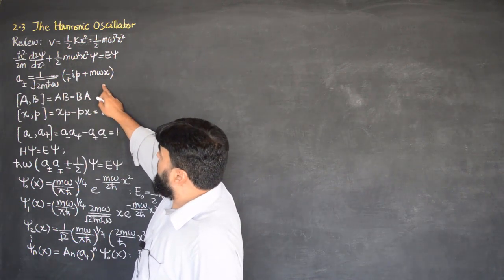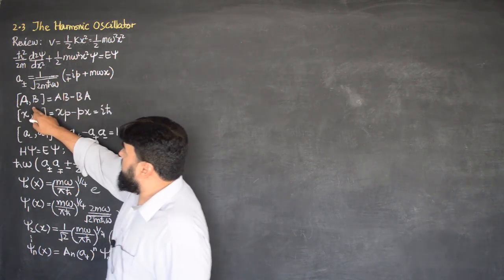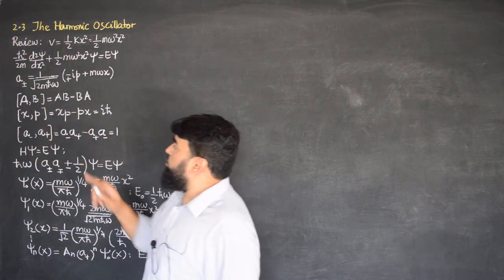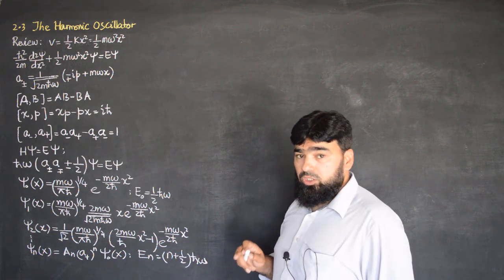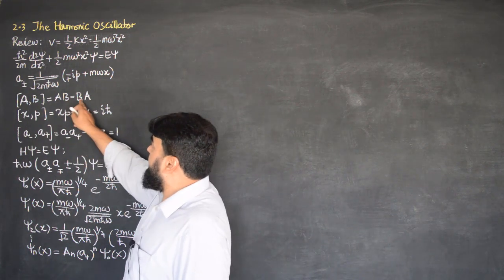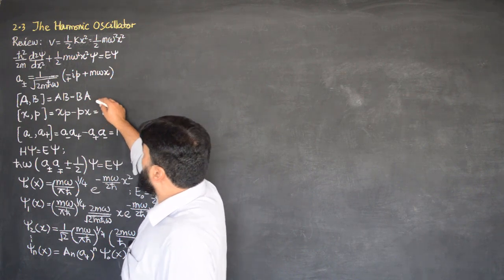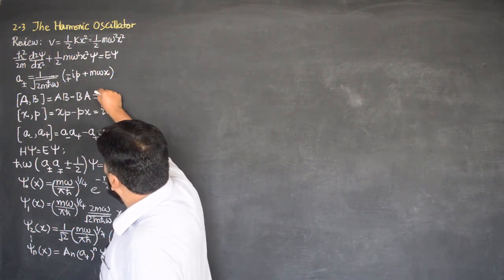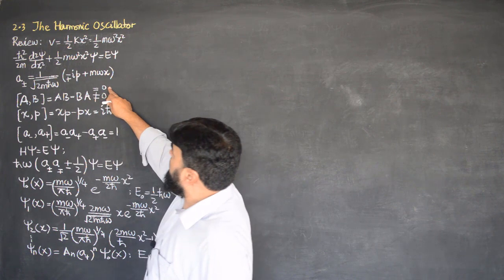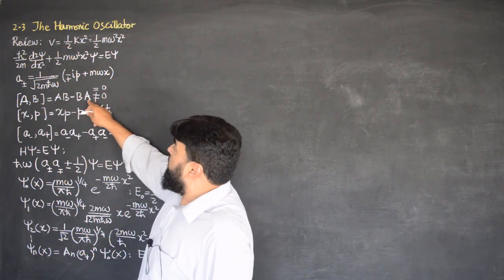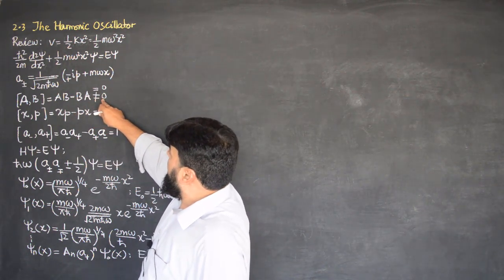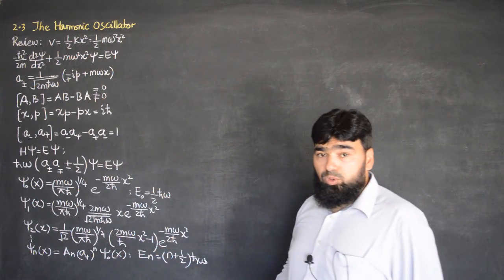While treating the operators, we came across the commutation relation. For any two operators, when we want to find out whether the order of their measurement will disturb the measurement — whether operating one first and then the other gives zero or non-zero — we check the commutator. If it is zero, the two operators commute and the order of measurement does not matter. If it is non-zero, they are non-commuting operators.